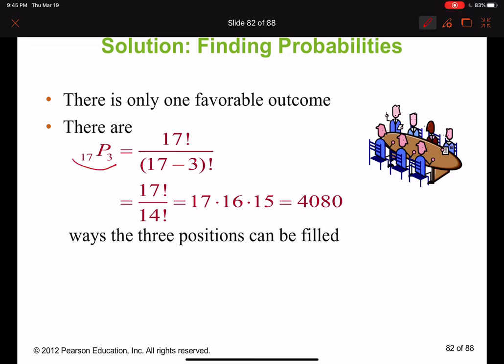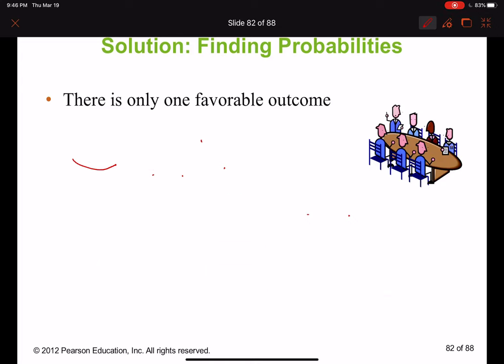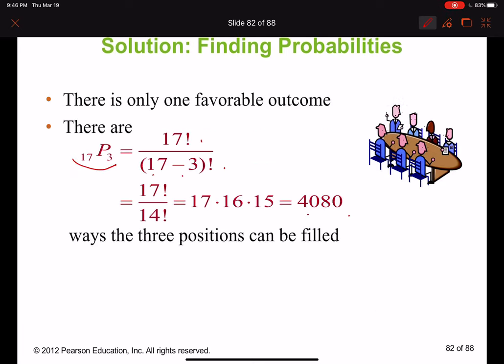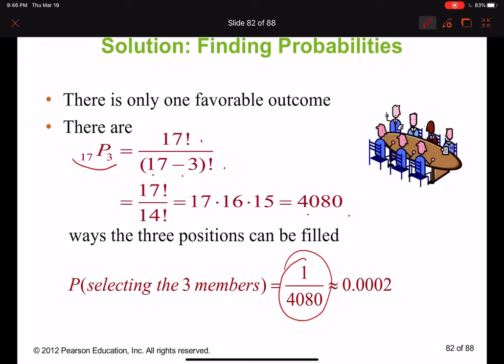So three out of 17, and we get 17 factorial over 17 minus 3 factorial. The result, once you solve it, you get 4080. So there are three positions, 4080 ways for three positions to be filled. And because each one of them can become, if you look, what's the probability of selecting at random the three members that hold each position? So each of them can be chosen.